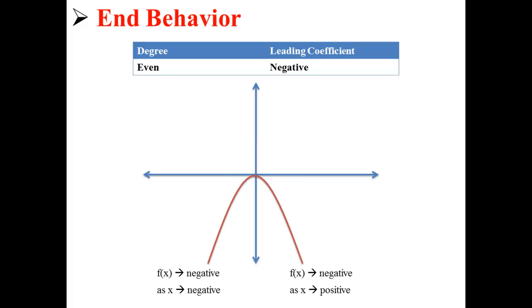If you have an even degree and a negative leading coefficient, then as x approaches negative infinity, f of x approaches negative infinity. And as x approaches positive infinity, f of x approaches negative infinity, as shown in the graph above.